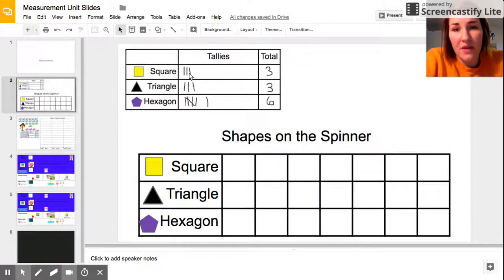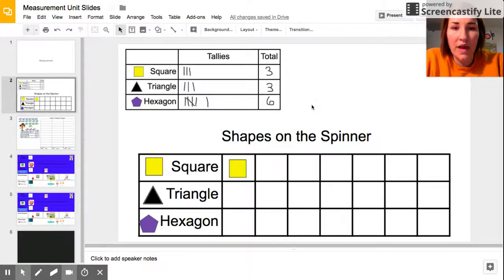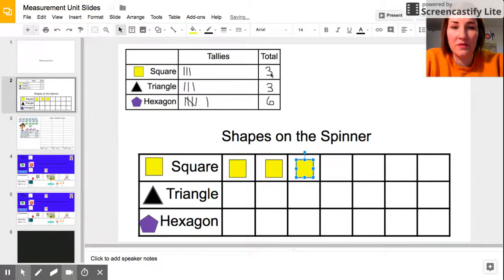We have squares, and remember we had three tallies, so three total times that the spinner landed on squares. Within the boxes we are going to place one square per time it was landed on. So we need to fill three boxes with our squares. Three squares, three times it was landed on in our tally chart.